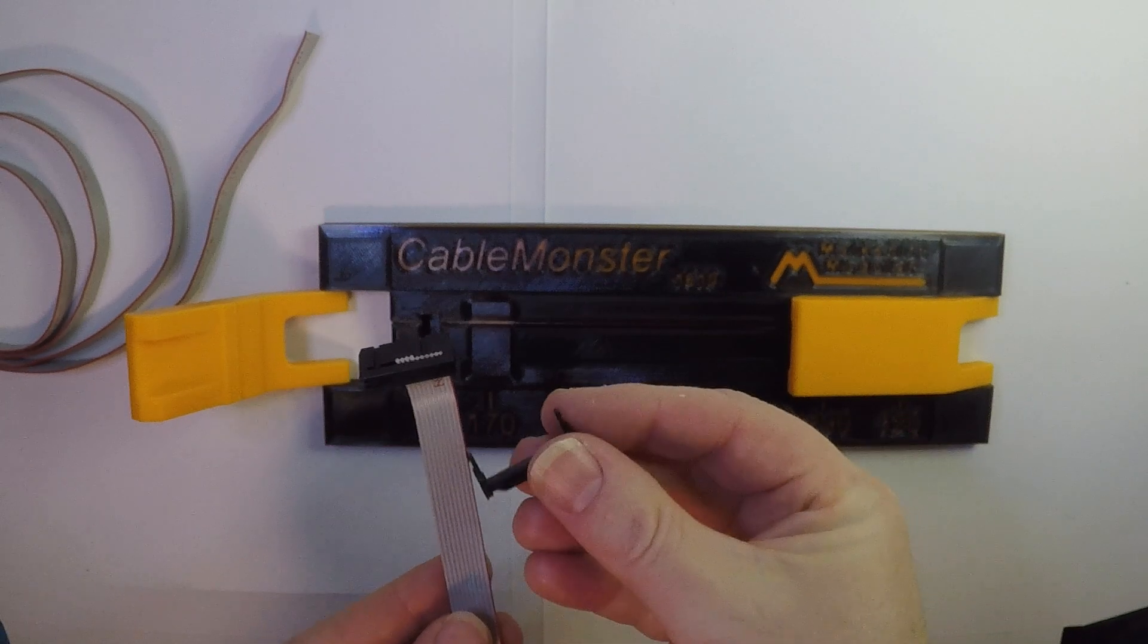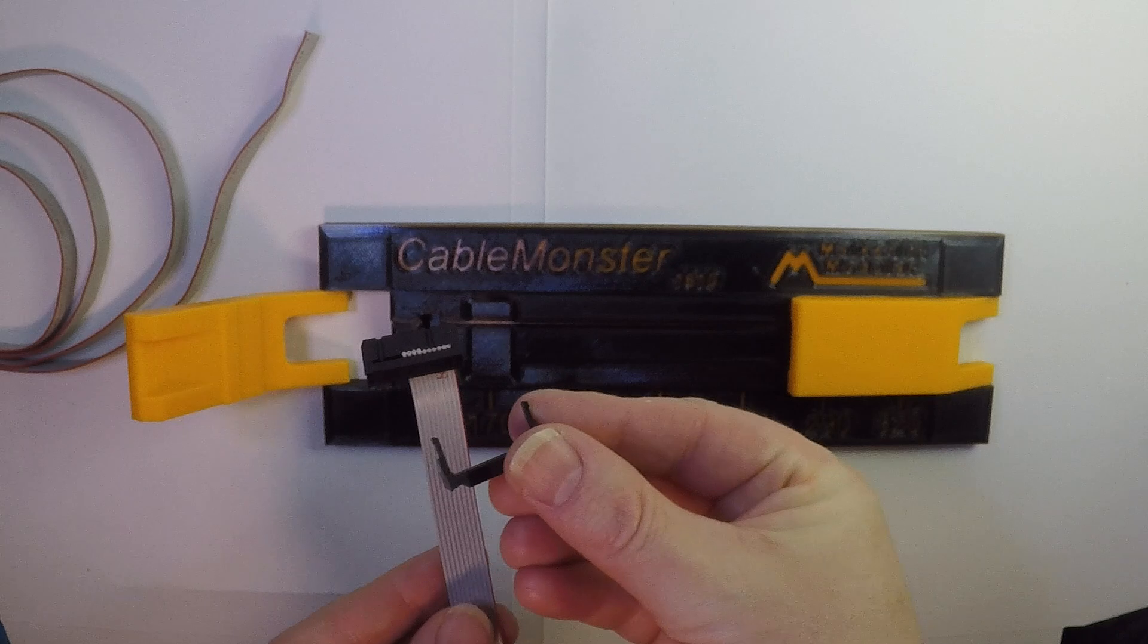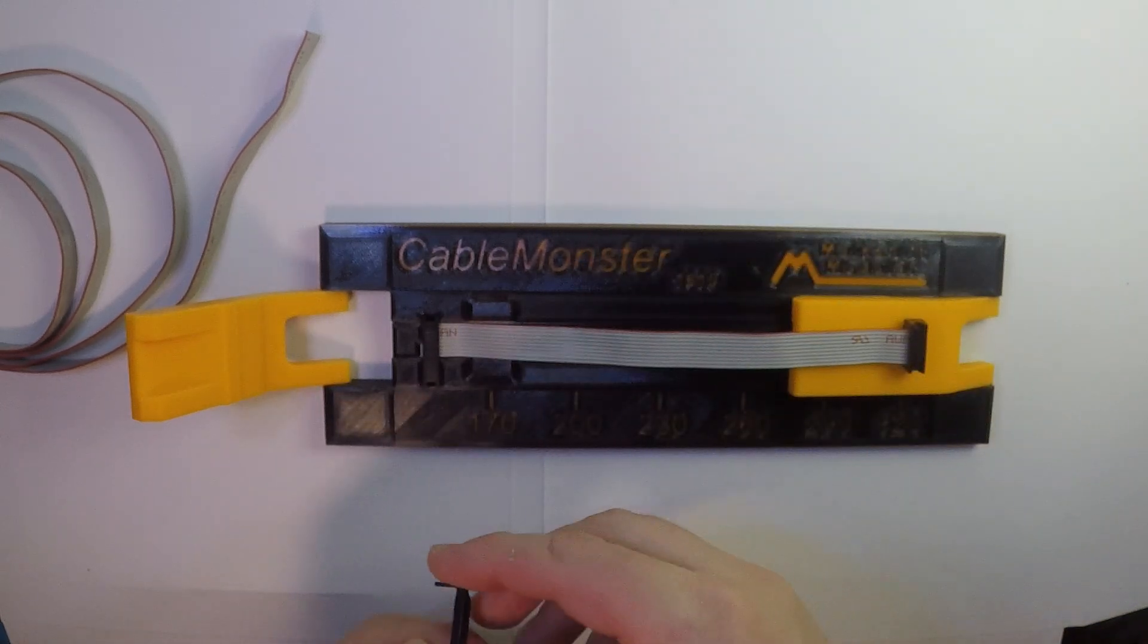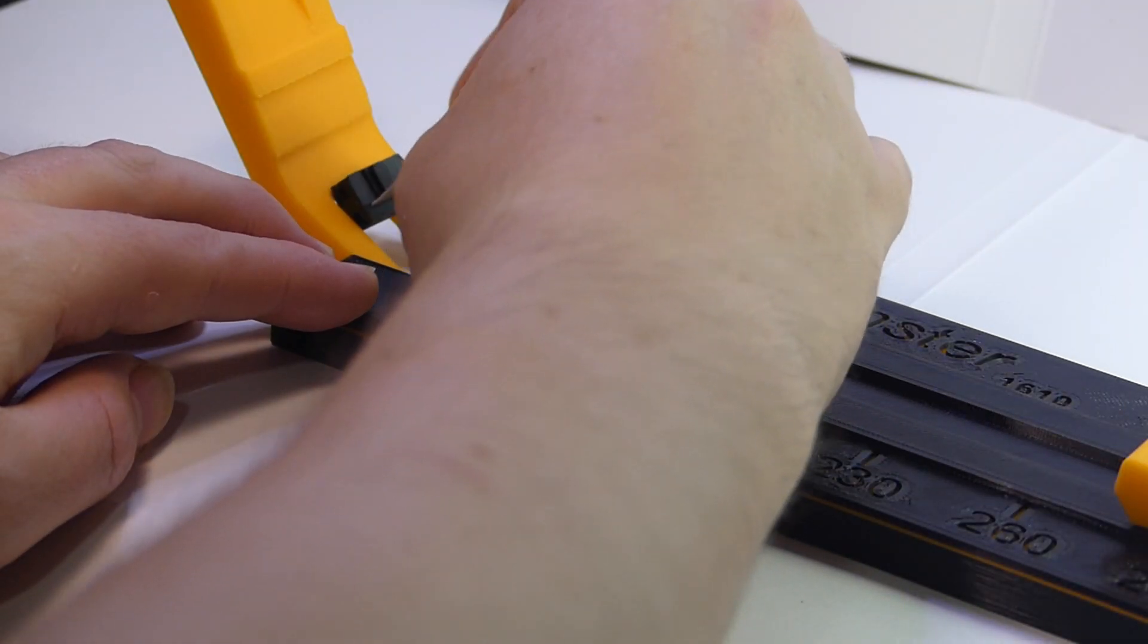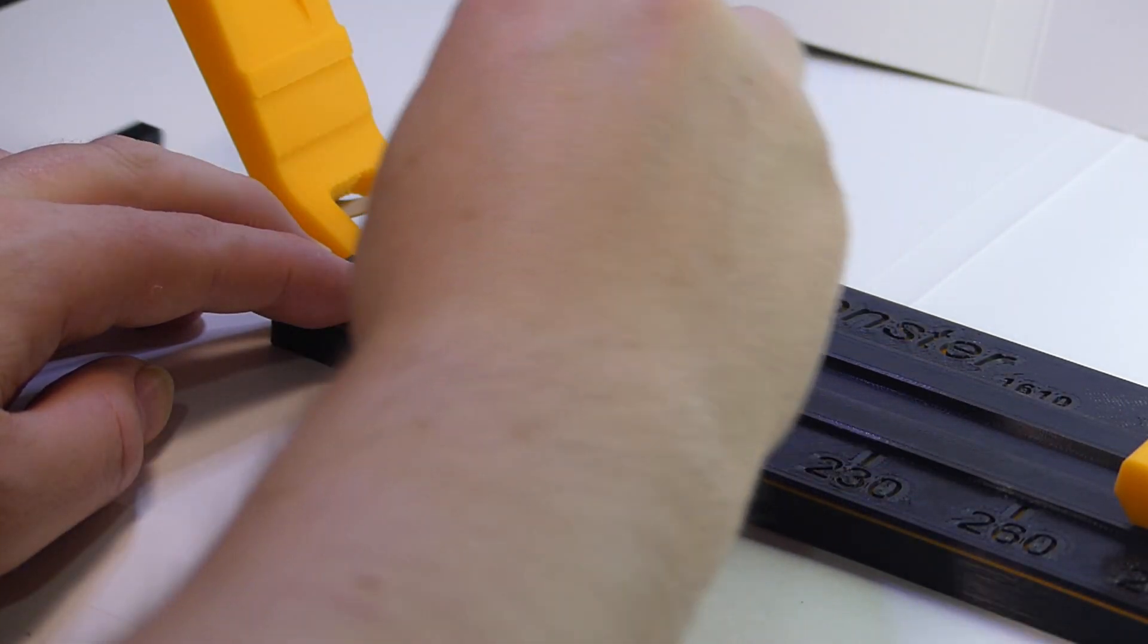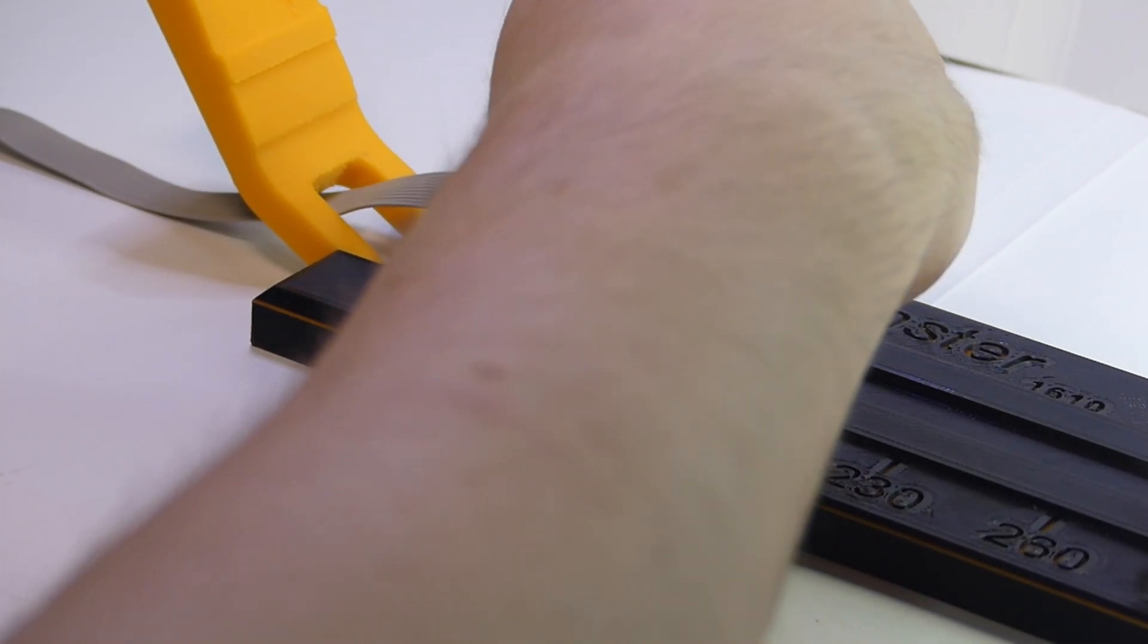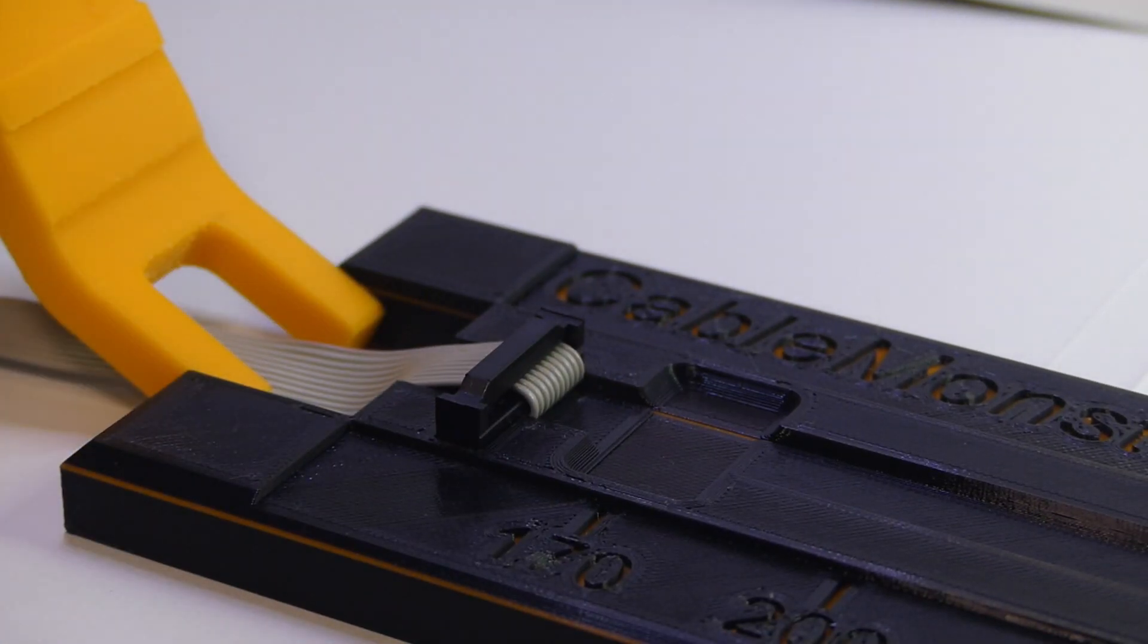Some people prefer a cable with a strain relief. Adding a strain relief with the CableMonster is easy. Simply reinsert the connector and feed the cable underneath the handle. While pulling the ribbon cable taut with the left hand, insert the strain relief, which snaps into place.